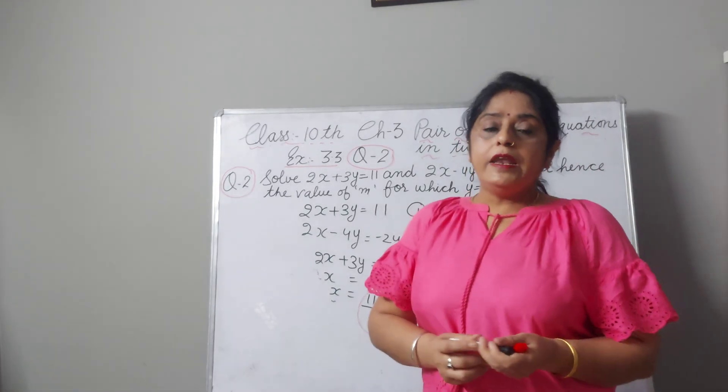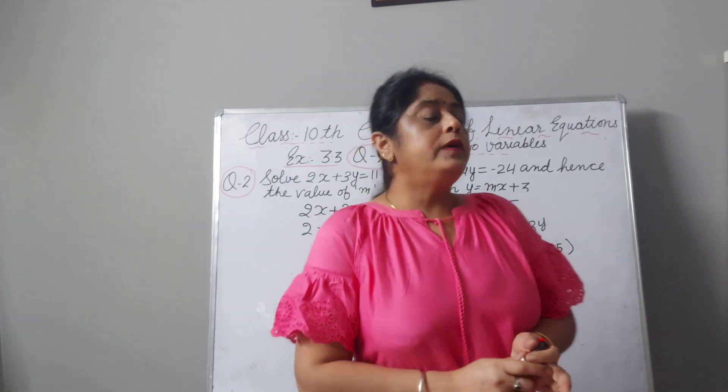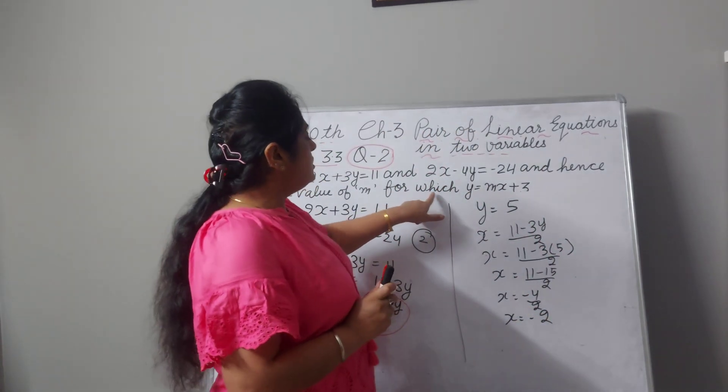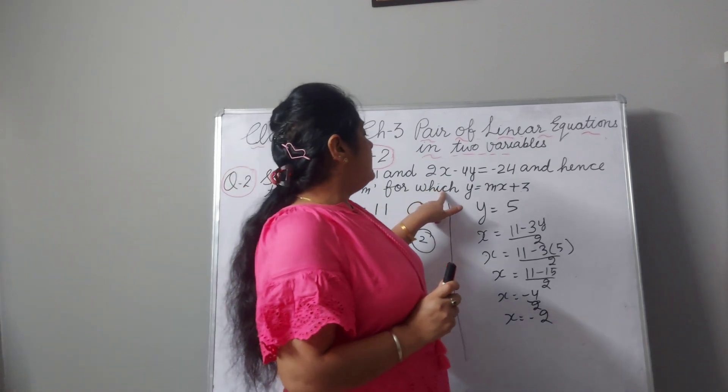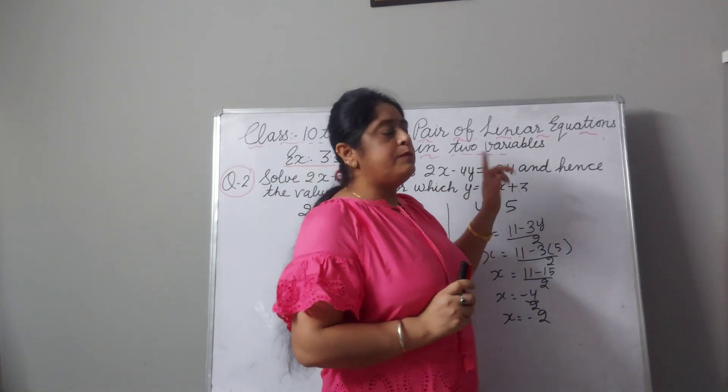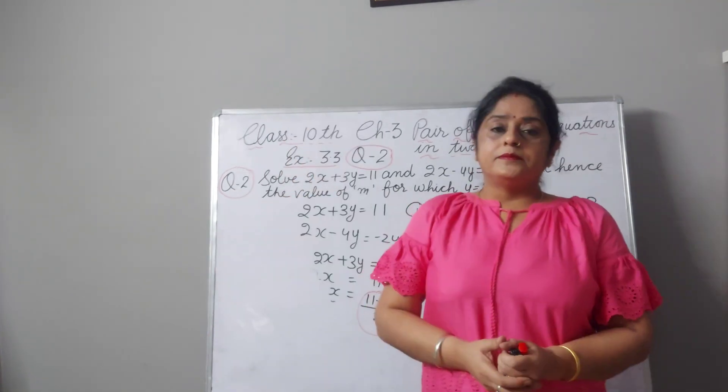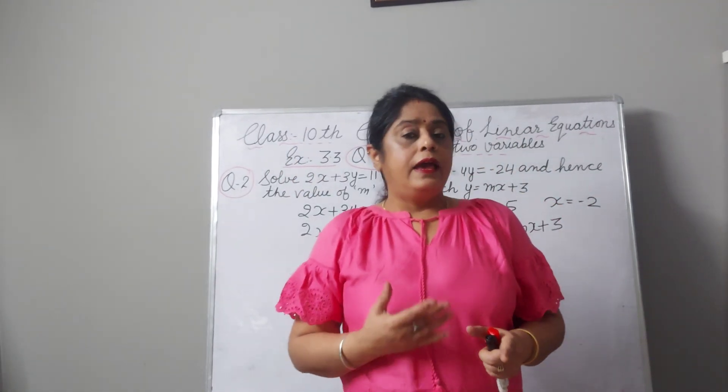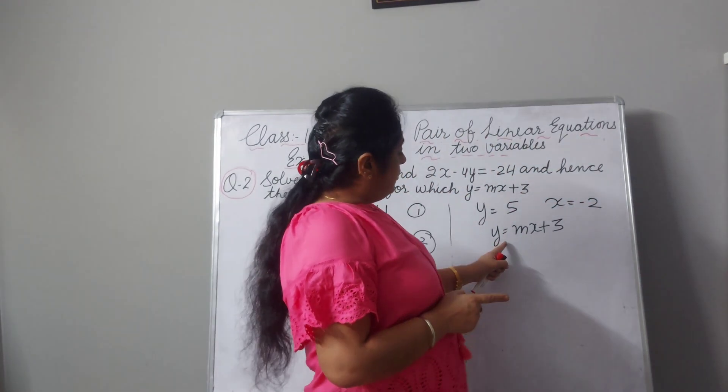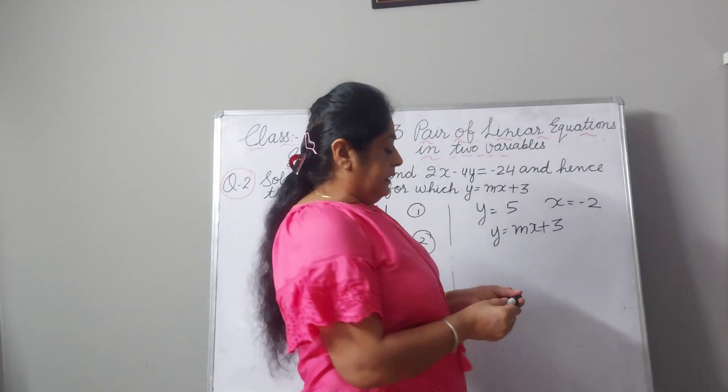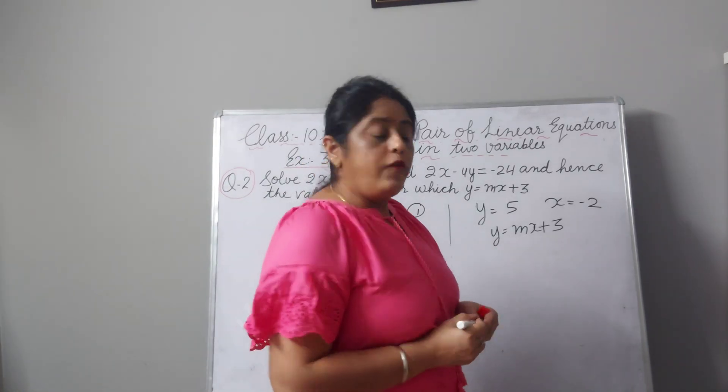Now we have y value and x value but we have still one question left. Here we have to find the value of m for which y is equal to mx plus 3. Now we will solve this. x value we find and y value we get it. Now x and y value we will put here and then we will get the value of m.